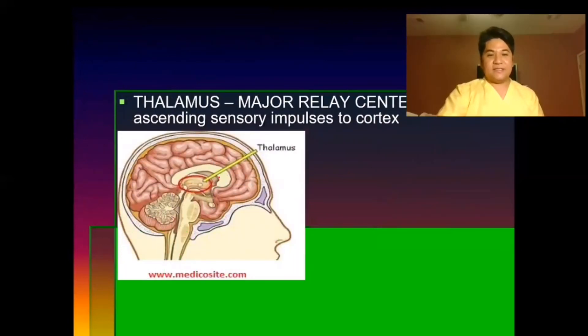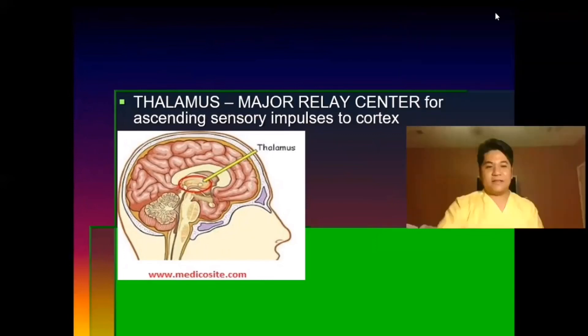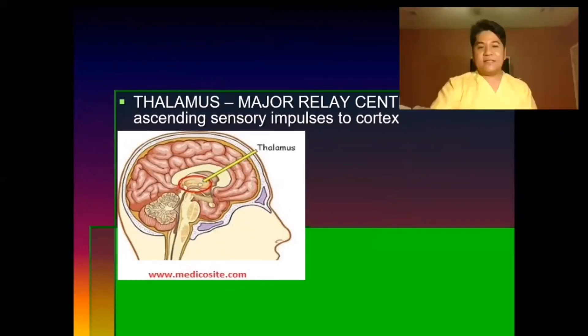The thalamus is a pathway or the major relay center for ascending sensory impulses to the cortex of your brain.